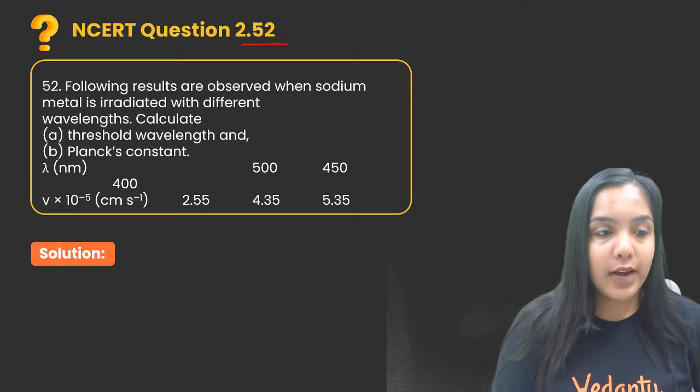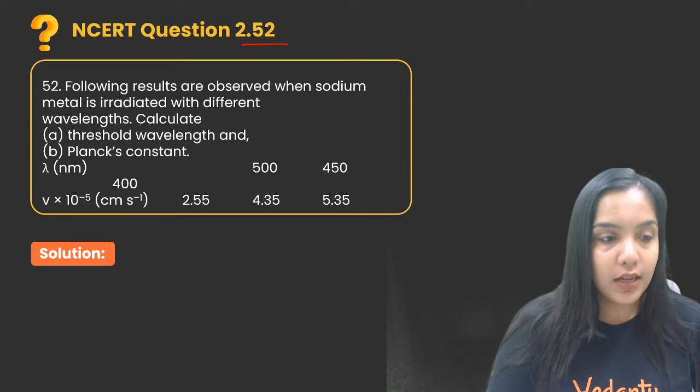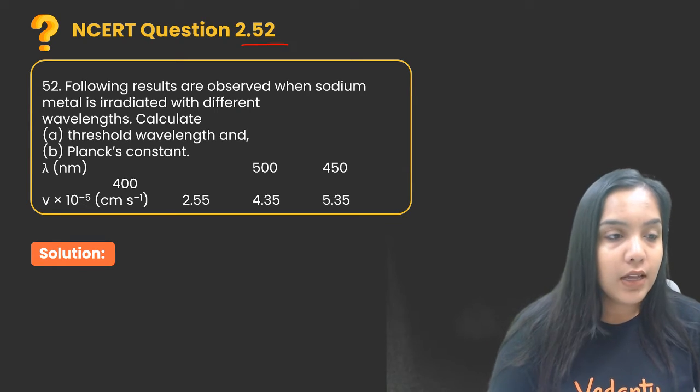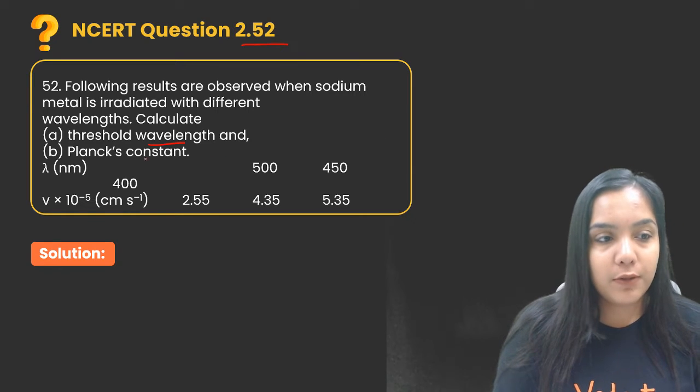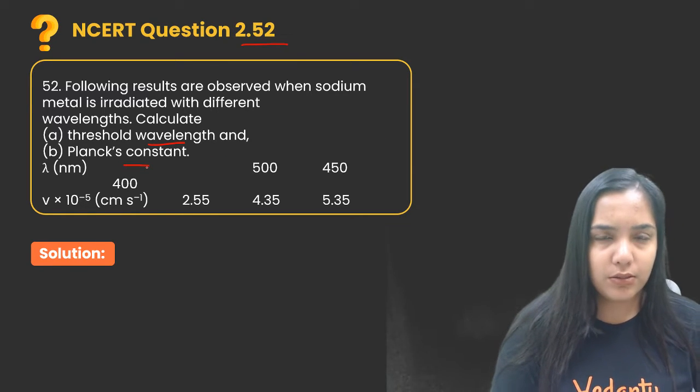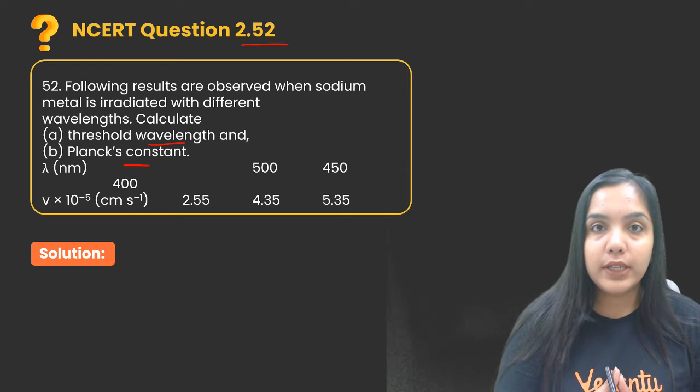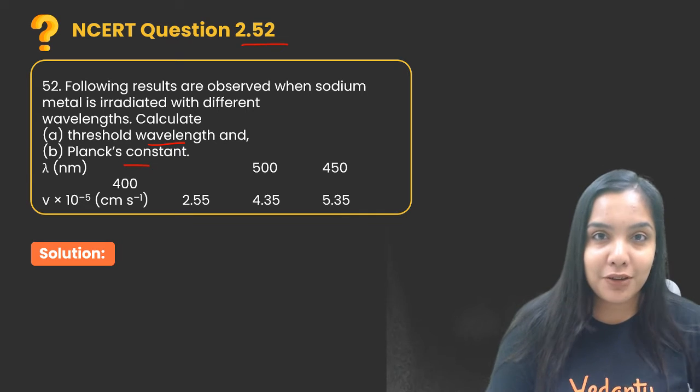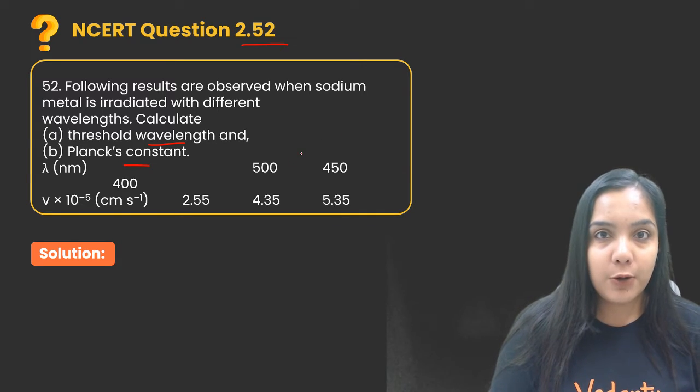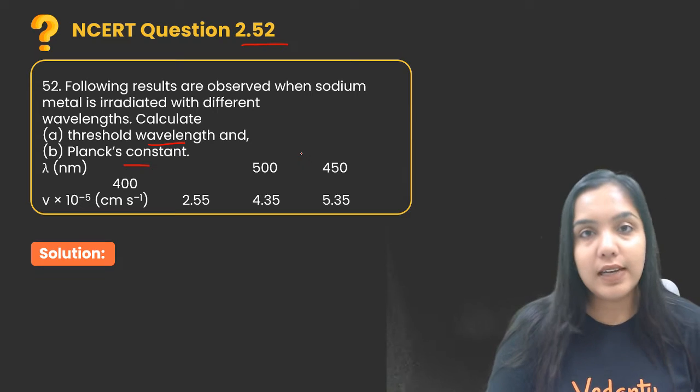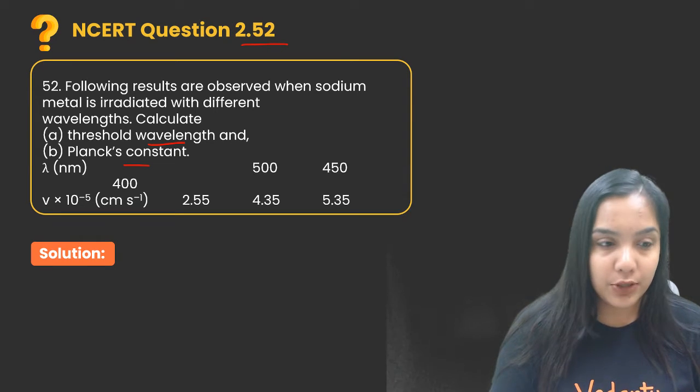We have been provided with data of wavelength and velocity. Now we have to find out threshold wavelength and Planck's constant. To solve this question we have to go into the details of particle nature of matter where we learned about photoelectric effect as well as Planck's quantum theory.